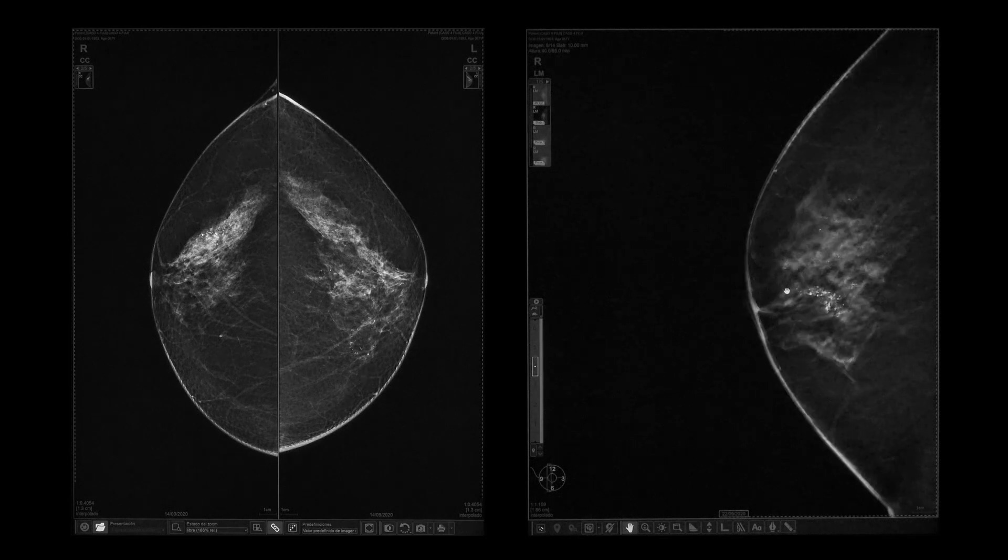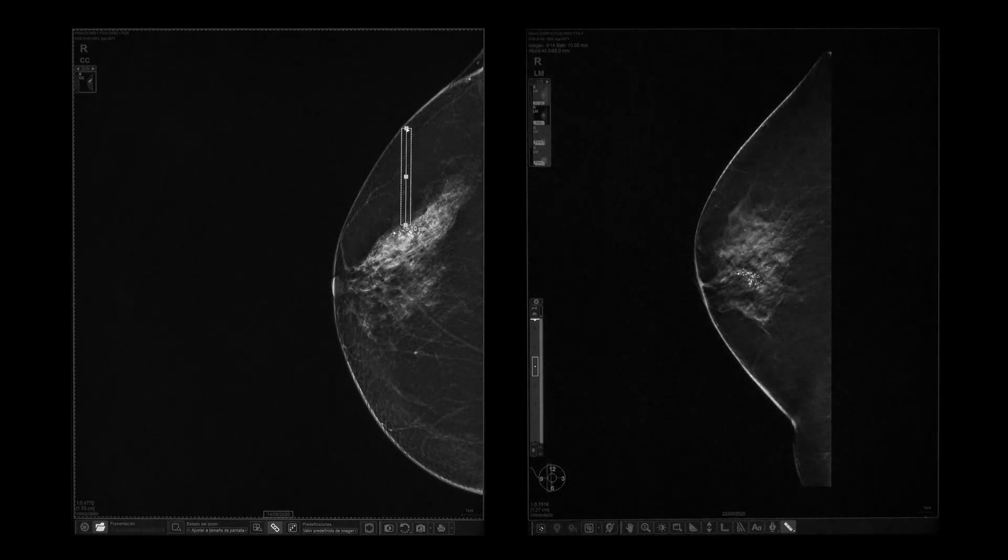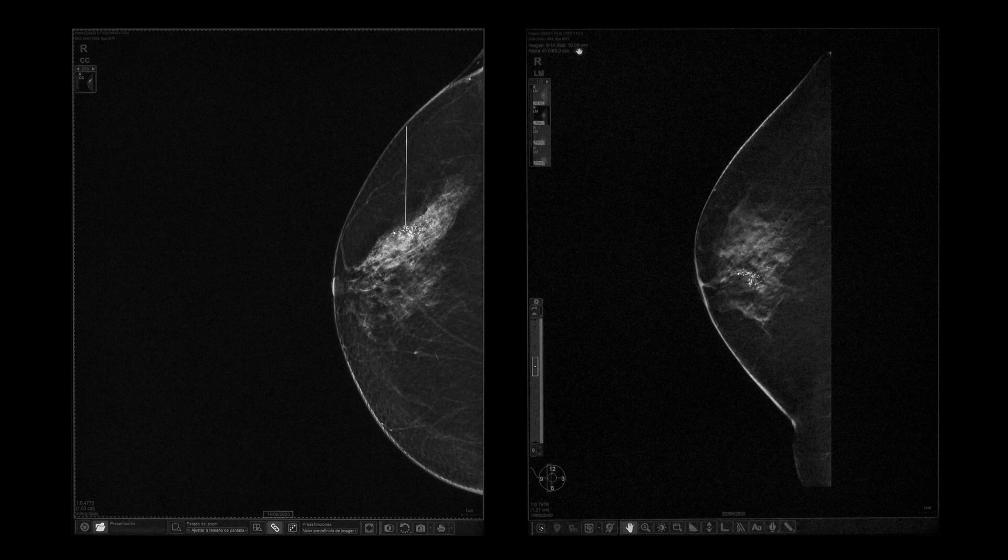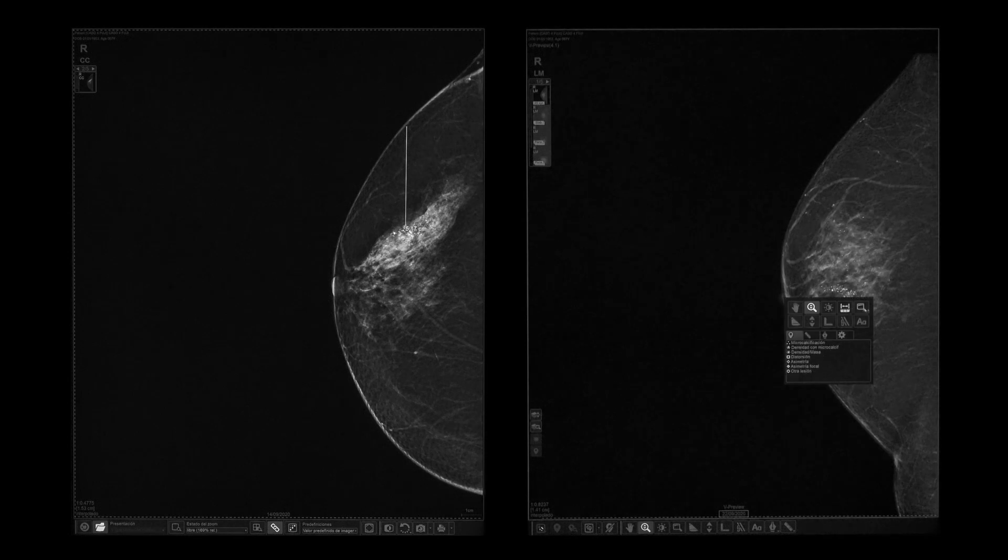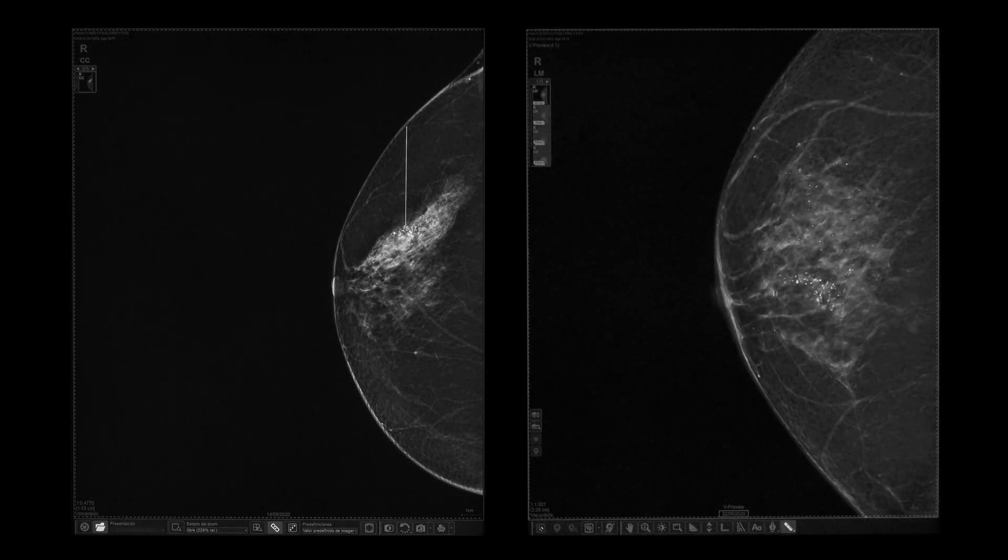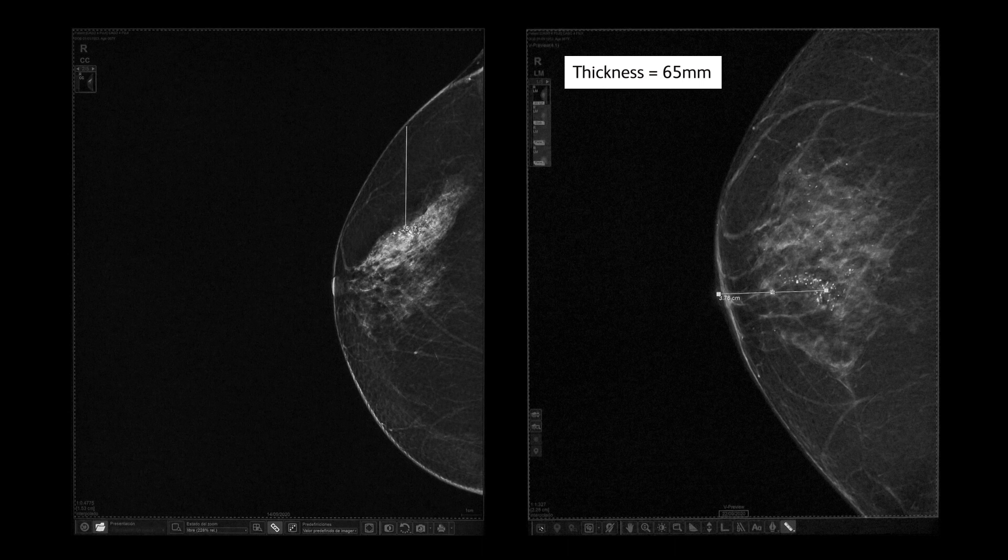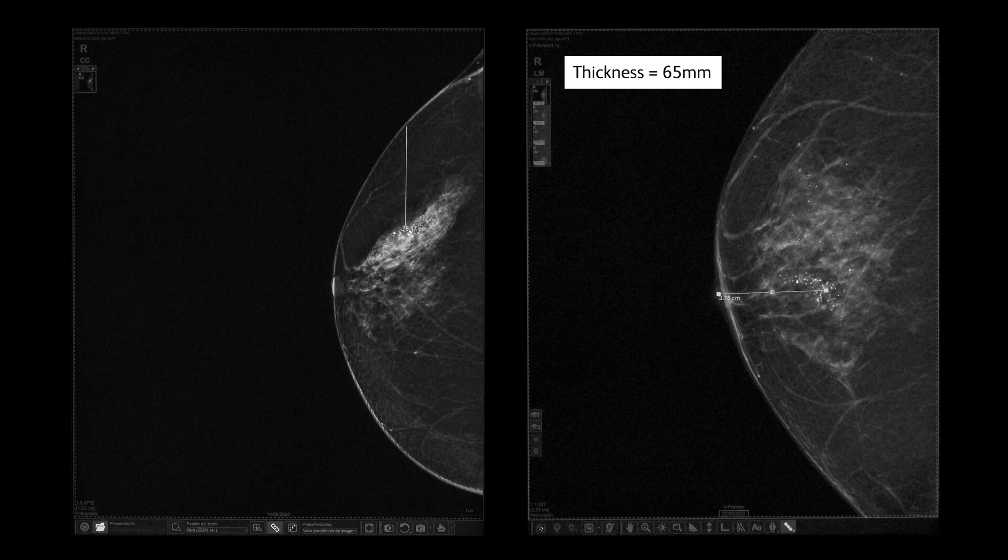To decide the best access, let's take a couple of measurements. In the cranio-caudal view, draw a straight line from the lesion to the skin, outer quadrant. This is 5.17 centimeters. Sitting position, horizontal approach, external access could be a possibility. In the lateral medial view, draw a straight line from the nipple to the lesion. This gives 3.78 centimeters. Since breast thickness would allow a vertical approach and considering patient comfort and shortest approach, lateral decubitus external access is selected.